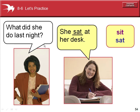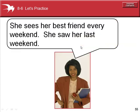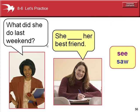What did she do last night? She sat at her desk — past tense. She sees her best friend every weekend — present tense. She saw her last weekend — past tense. What did she do last weekend? She saw her best friend — past tense.